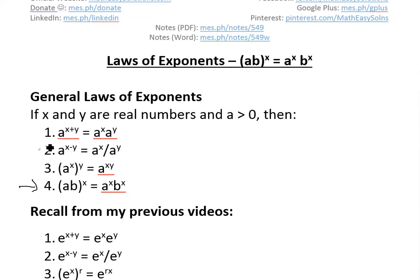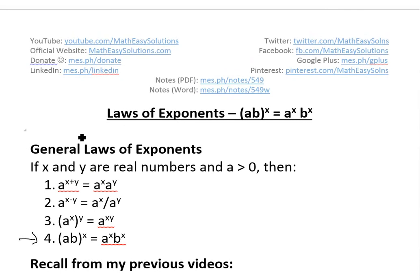You can see the proof for the first three in the video links below. To recap on the general laws of exponents, if x and y are real numbers and a is greater than zero, then we have a to the power of x plus y equals a to the power of x times a to the y, and if it's a minus instead of a plus, then you just divide instead of multiply.